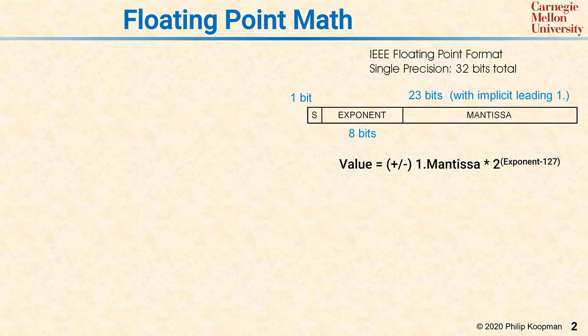Perhaps the most common floating-point format is the IEEE 32-bit single-precision floating-point format, which is what we'll be discussing. That format takes 32 bits and arranges them as a 1-bit sign, so that's plus or minus, an 8-bit exponent, and a 23-bit mantissa.